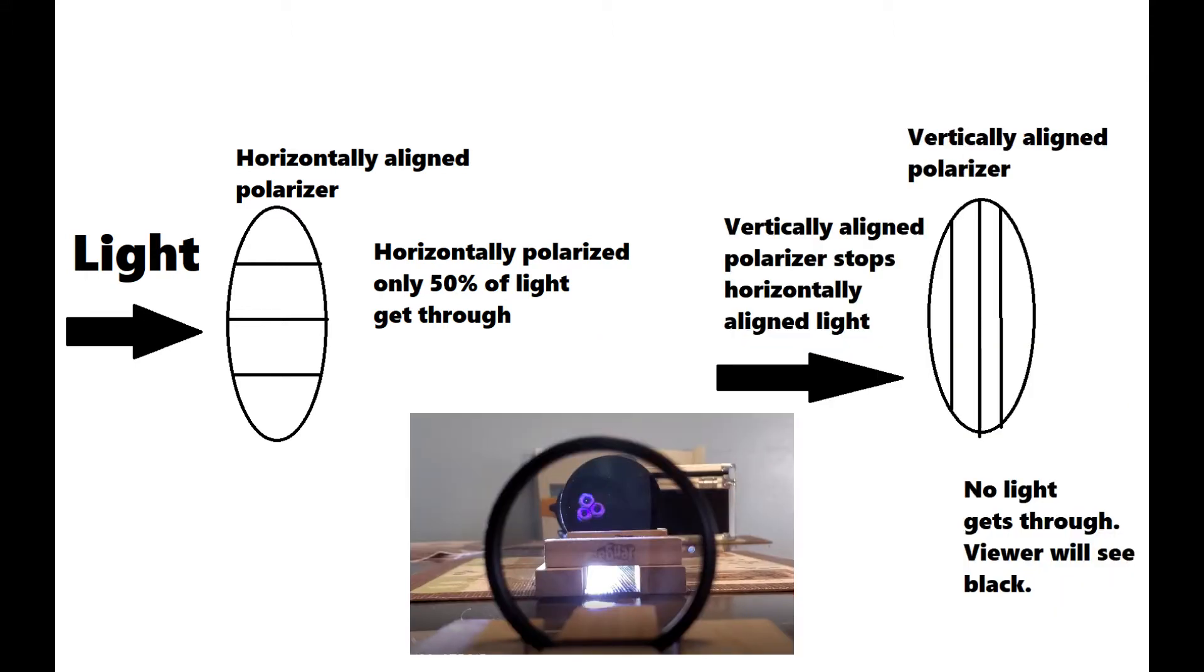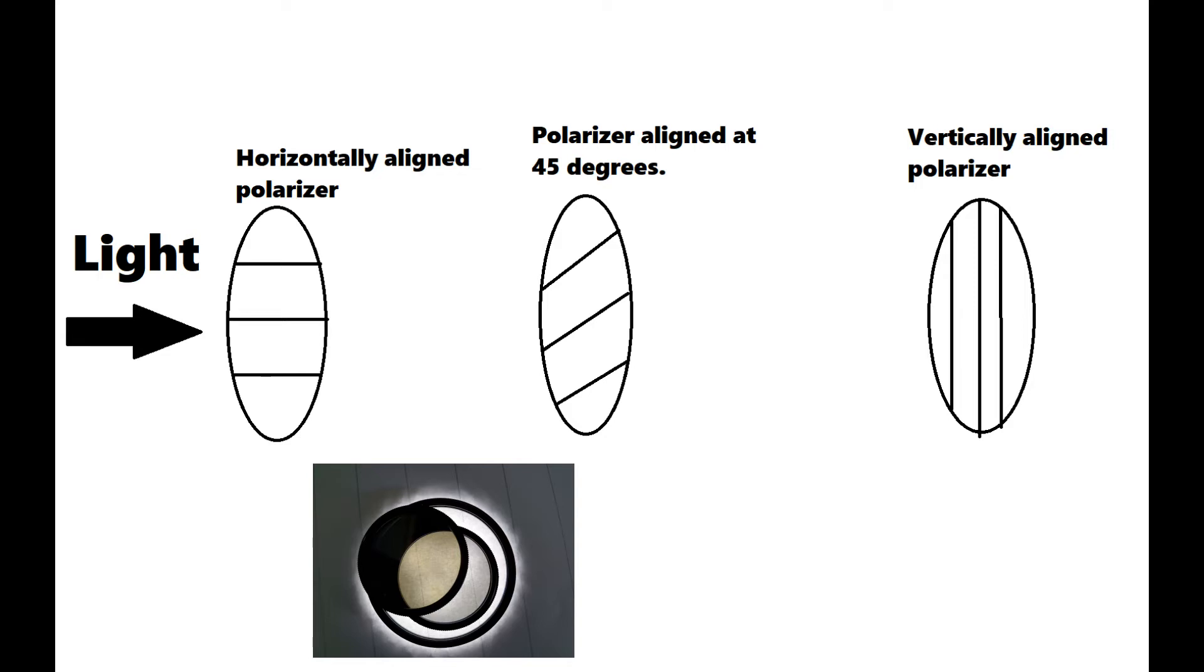Now if you place a polarizer aligned at 45 degrees in between the horizontally and vertically aligned polarizers, you will get this phenomenon—some light will get through. The reason why you see light is because the middle polarizer...